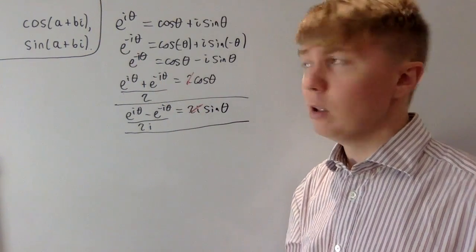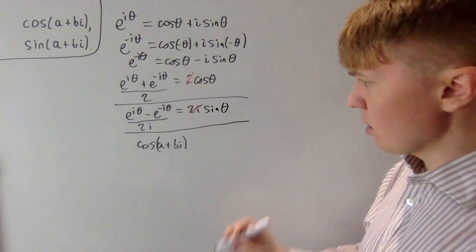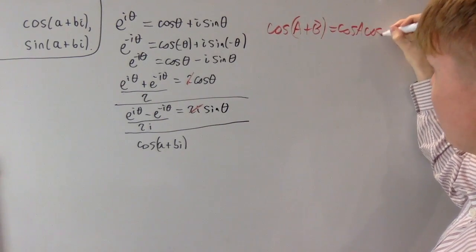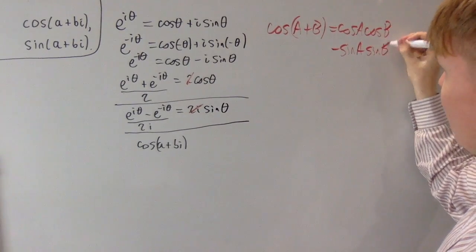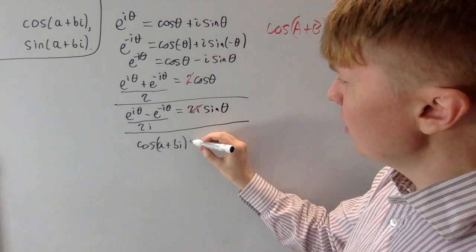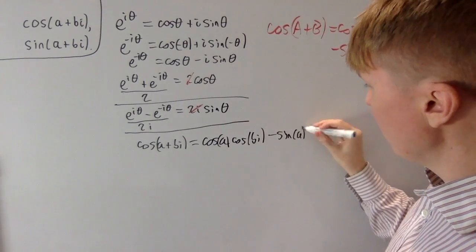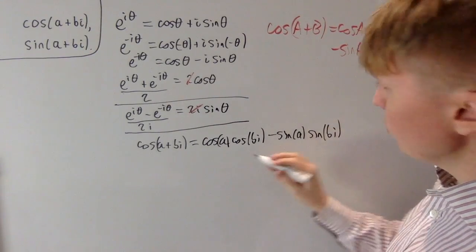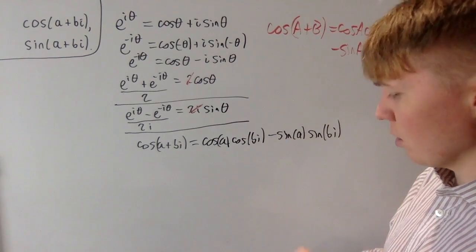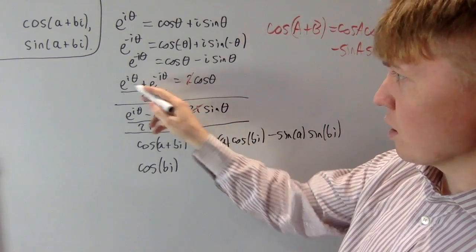Starting with cos, we notice that cos of a plus bi could be treated as an angle sum formula. So cos of a plus bi, using the identity cos of a plus b equals cos a cos b minus sine a sine b, gives us cos a cos bi minus sine a sine bi. We can actually prove this identity holds for complex numbers as well — in fact, it's easier to prove in this exponential setup. We've found an expression, but we can try to make it nicer by eliminating imaginary terms inside our functions.